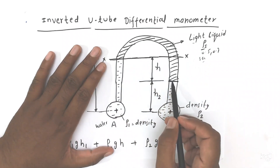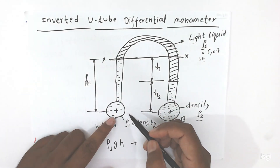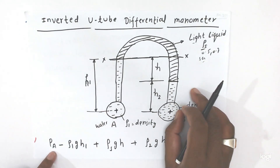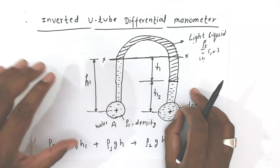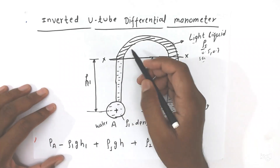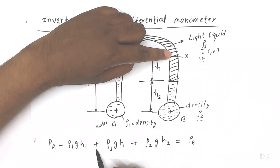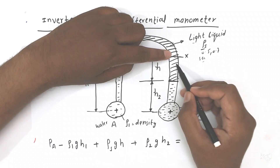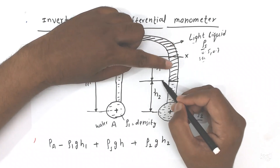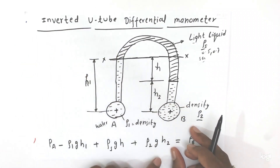This is the datum line we are considering. For the pressure calculation, we start from pressure Pa. When going to the top side, we consider minus. So Pa minus rho 1 · g · h1. Then coming down, we add plus rho s · g · h, and again coming down, plus rho 2 · g · h2, equal to pressure Pb.